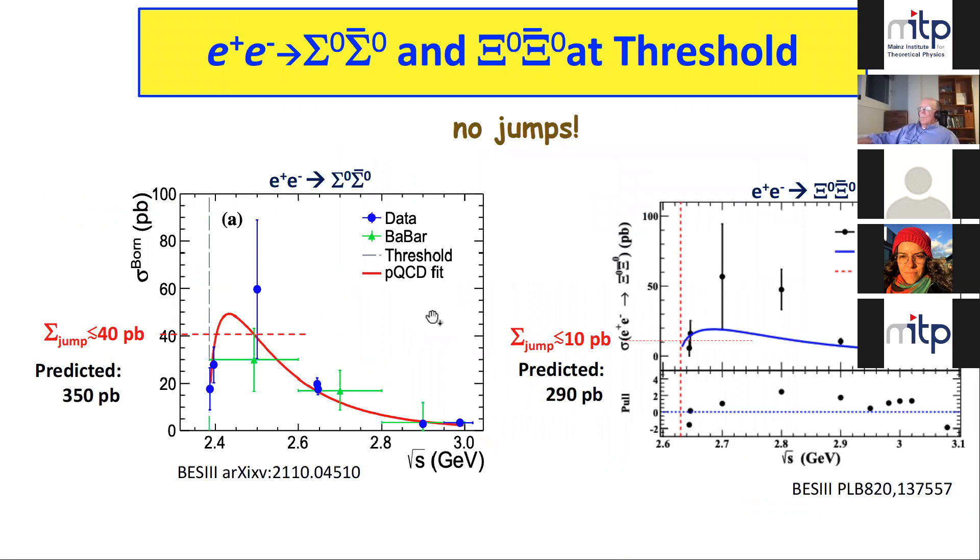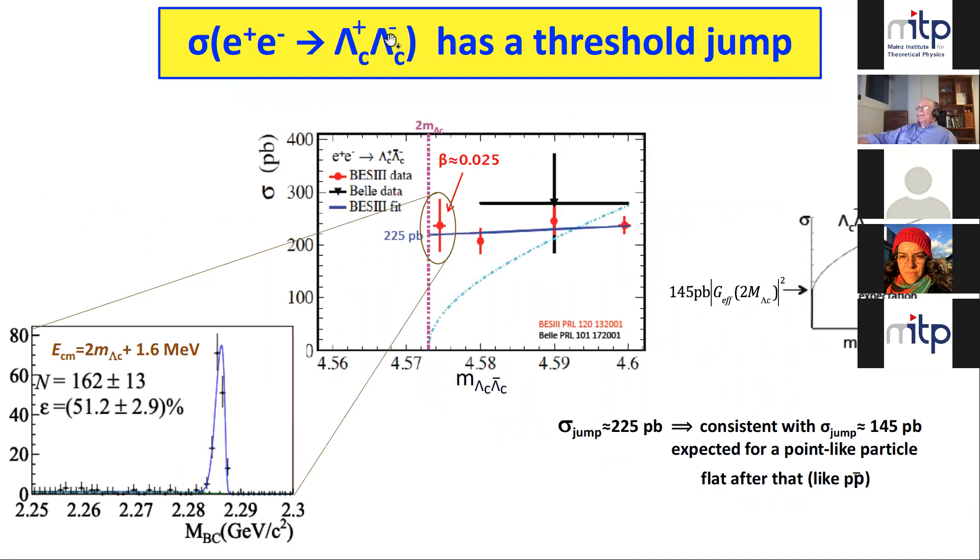But for the lambda C plus lambda C minus, right at threshold there's a jump. 225 picobarns. If we calculated with this formula I gave you before with the lambda C mass, we'd get 145 picobarns. The beta here is 0.025. The beta over here is 0.15, so it's like seven times difference. The phase space is seven times different between this point and this point, but this point is right there. It's just one MeV above the threshold. You can see in the data there's nothing mysterious, no background or anything fishy. You can just go there and count the number of events. They're very clean. It's amazing.